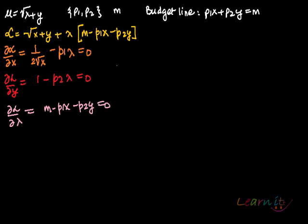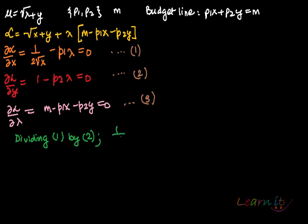Now let's name them. Supposedly this is one, this is two, and this is three. Dividing one by two, what is it that you will be getting? That is one upon two root x equals P1 by P2.